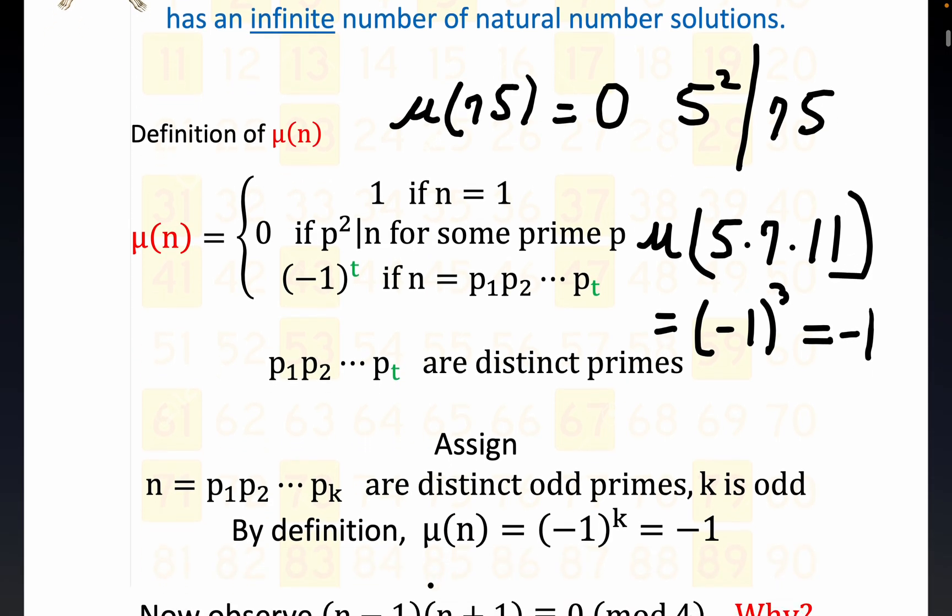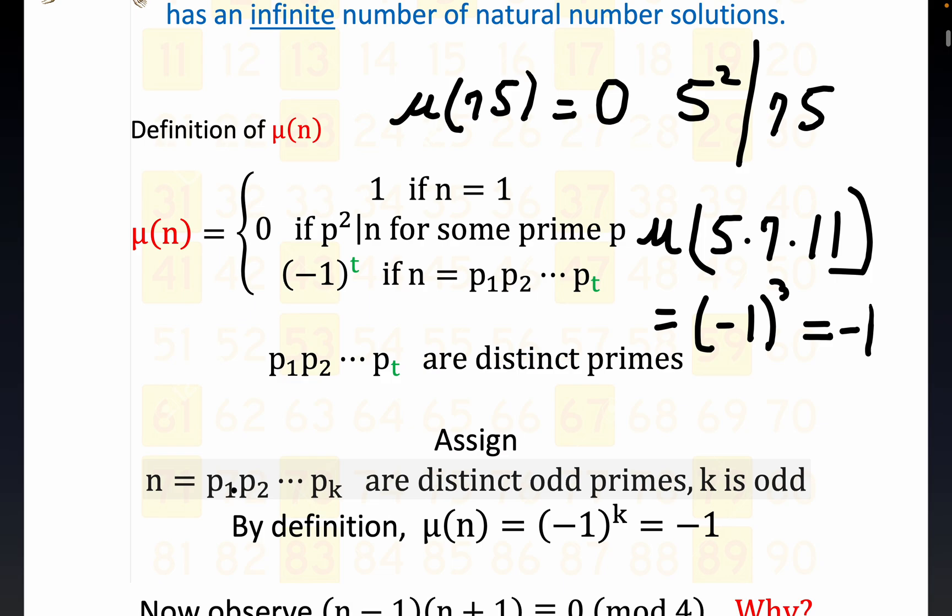The way this proof is going to go: we're going to let n be any product of k distinct odd primes, where k is an odd number and each of the primes is odd also. That means n would be odd itself. n itself by this assignment is going to be odd because it's the product of odd numbers. If you multiply a bunch of odd numbers together, whether they're prime or not, you're going to get an odd number back.